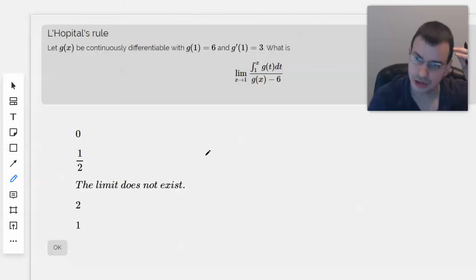Let g of x be continuously differentiable with g of 1 equals 6, g prime of 1 equals 3. What is the limit as x approaches 1 of this?